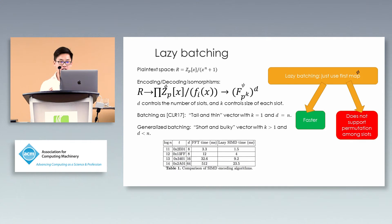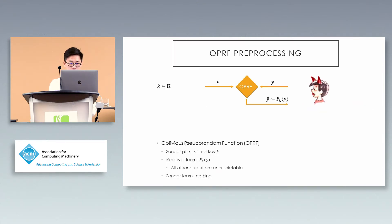The advantage of only evaluating the first map is we get much faster encoding. In this table, if you have a large D value, meaning each plaintext slot is big, then doing this lazy version of batching is much faster than evaluating the whole thing.